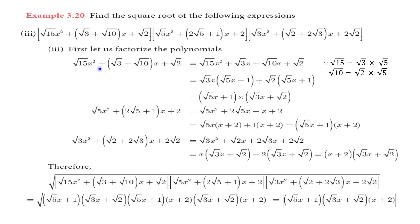The first expression is: the square root of 15x² plus √3 plus √10 into x plus √2. First, in the x term, we multiply √3 and √10. We multiply √3x plus √10x. If we multiply √15, we get √5 times √3 into √5. So the first term is √3 and the second term is also √3, meaning √3 is common.